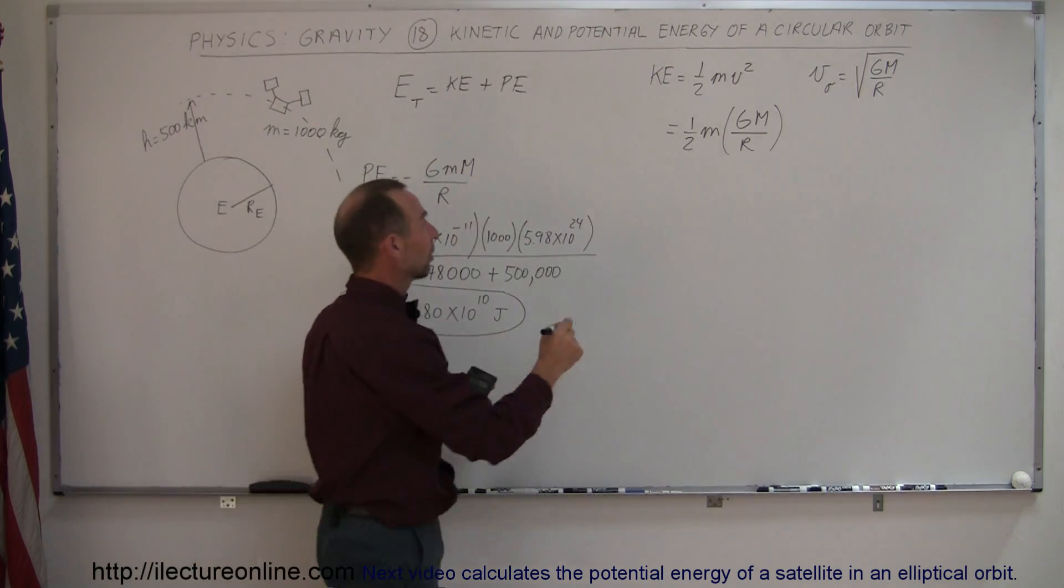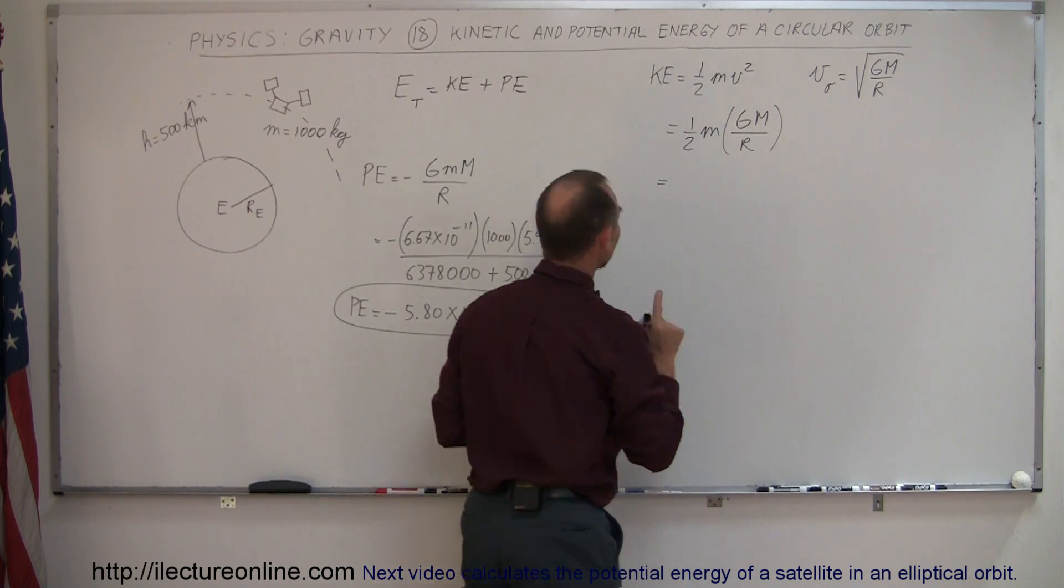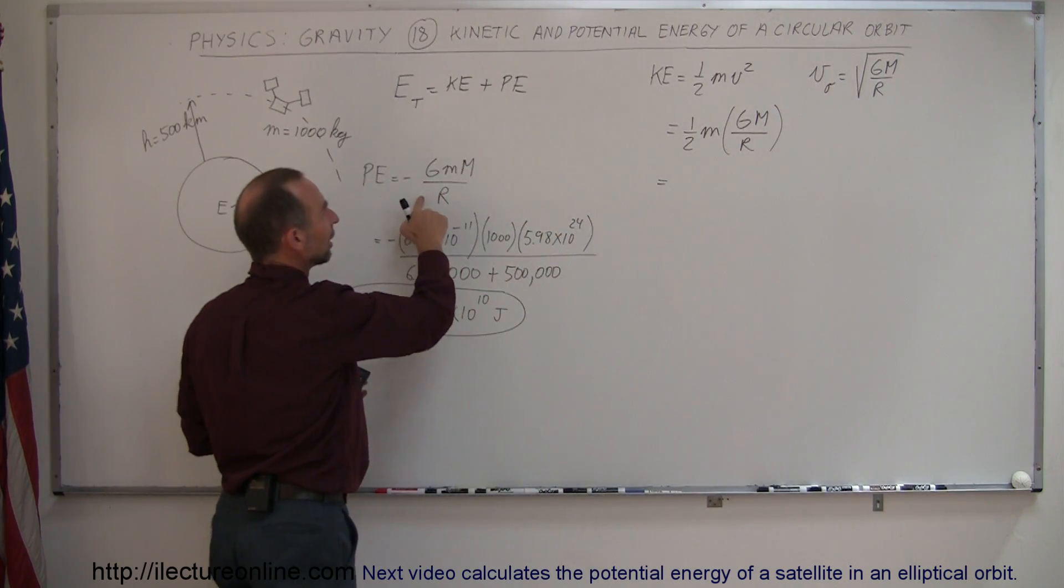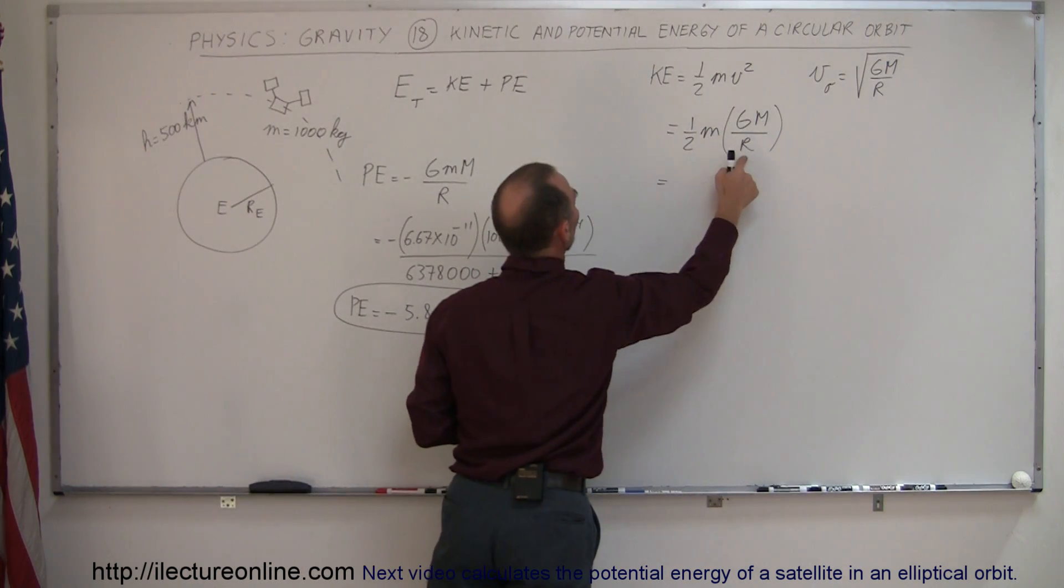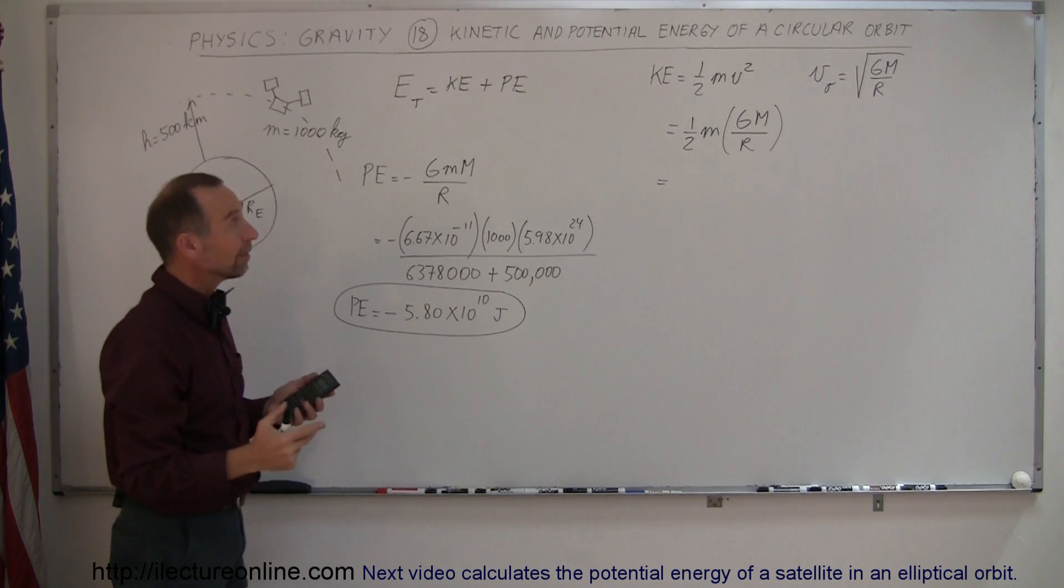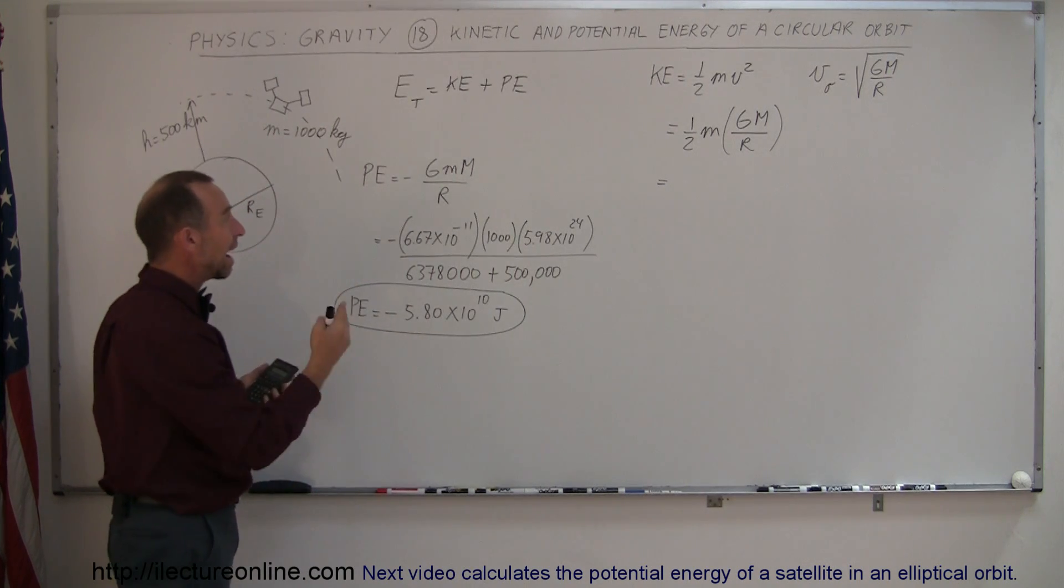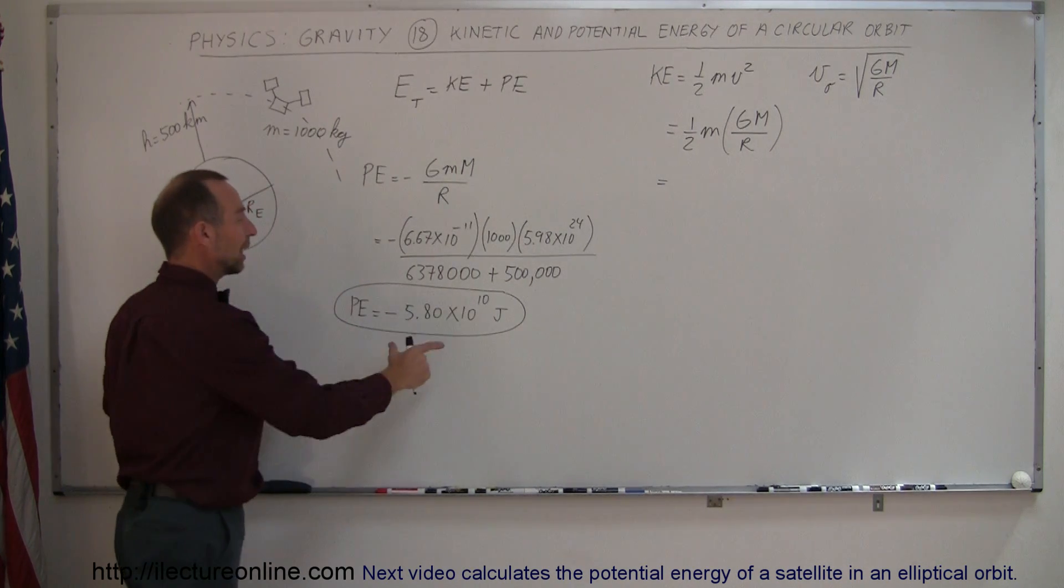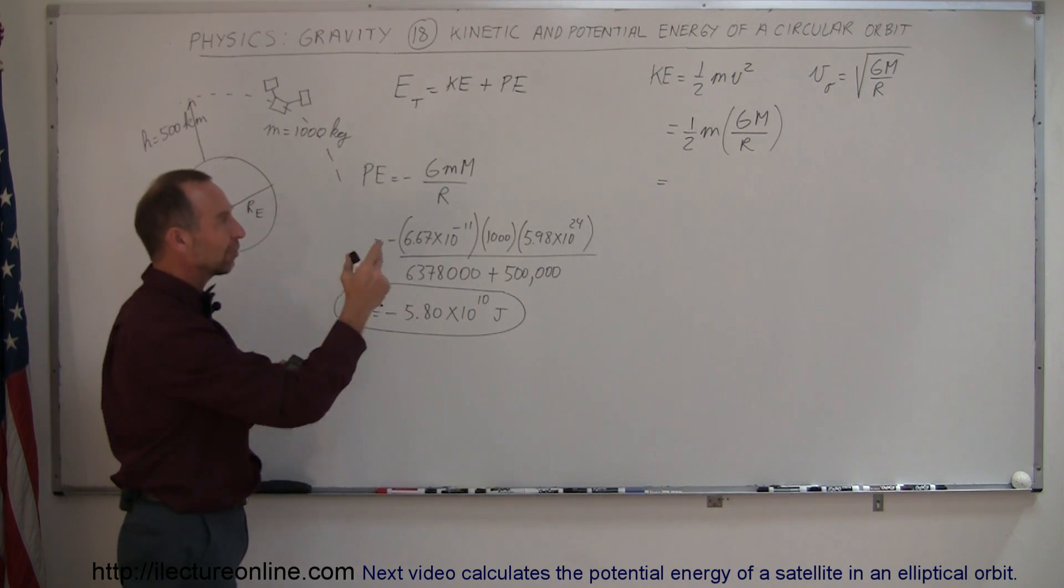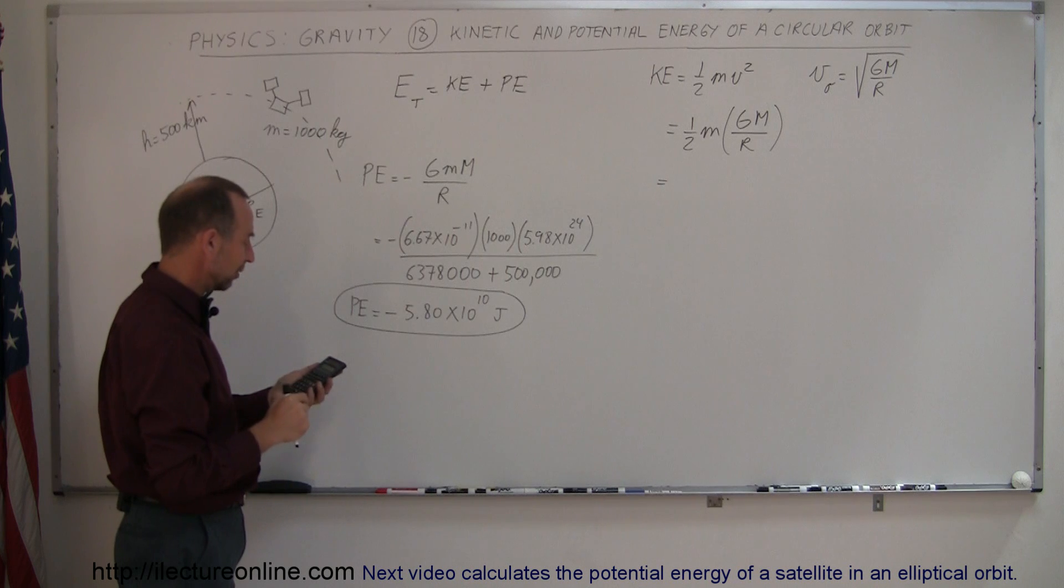Okay, plugging in the numbers, now interestingly enough, take a look at that equation and take a look at this equation. It's still GMm over r, but it's times one-half and positive, which means that the kinetic energy is going to be half as much in magnitude as this, but a positive value. So it's interesting that this is always going to be the case because of the way the equation is laid out.